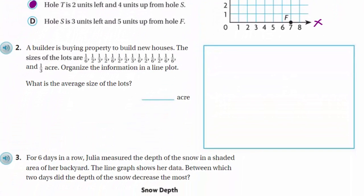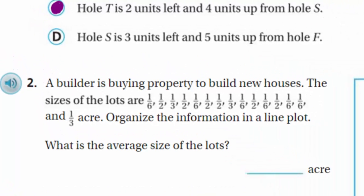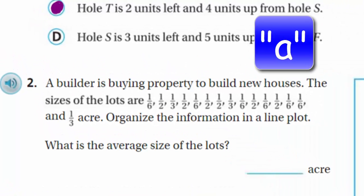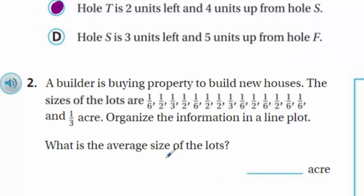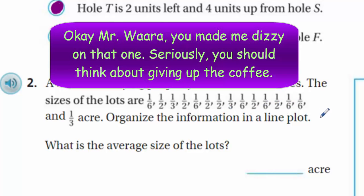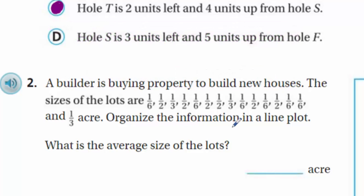It says a builder is buying property to build new houses. The sizes of the lots are: one-sixth, one-half, one-third, one-half, one-sixth, one-half, one-half, one-third, one-sixth, one-half, one-half, one-sixth, one-half, one-sixth, one-half, one-sixth — and one-third acre. Organize the information in a line plot. What is the average size of the lots?